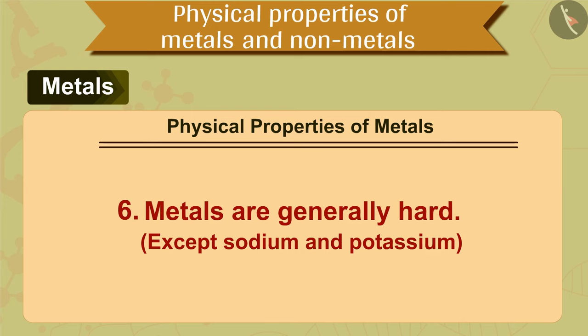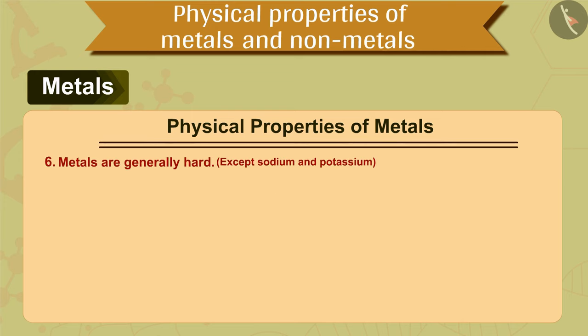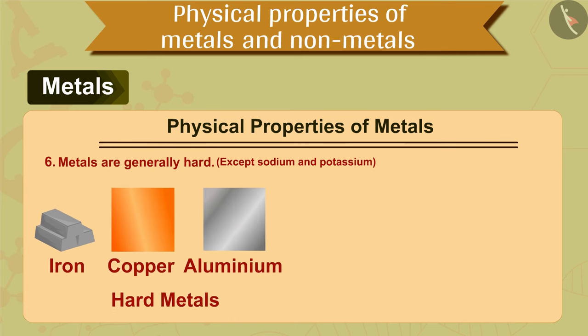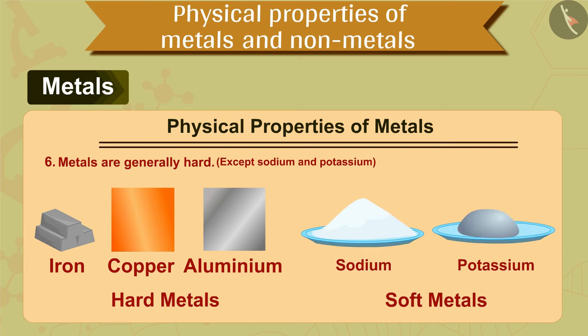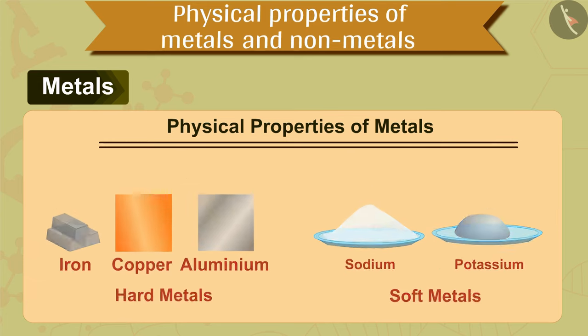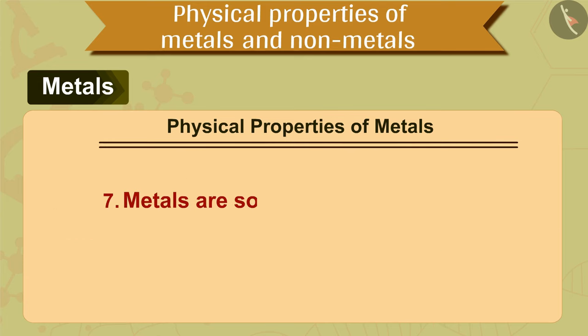Most metals are hard, but not all metals are equally hard — the hardness varies from metal to metal. Most metals like iron, copper, and aluminum are very hard. However, certain metals like sodium and potassium are very soft and can even be cut with a knife.